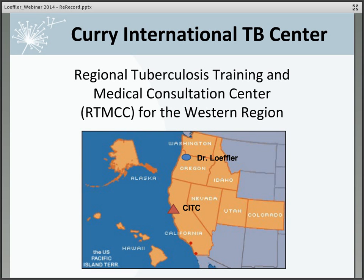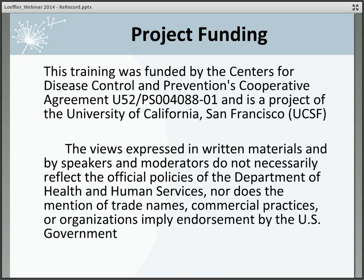The Curry Center currently covers jurisdictions in the western region that include Washington State, Oregon, Idaho, California, Nevada, Utah, Colorado, Alaska, Hawaii, and the U.S. Pacific Island Territories. This project was funded by the Centers for Disease Control and Prevention's Cooperative Agreement and is a project of the University of California, San Francisco.